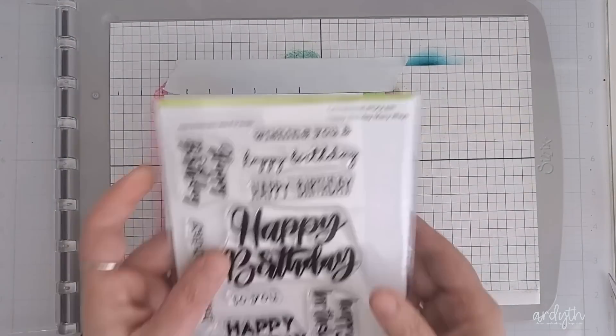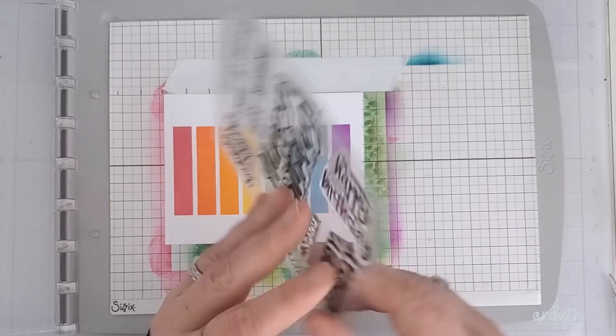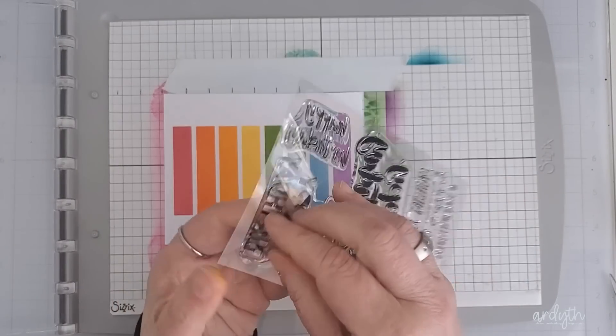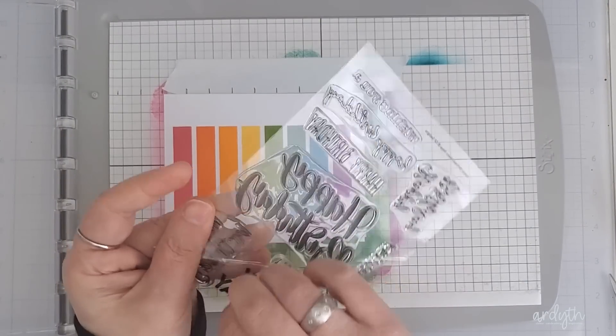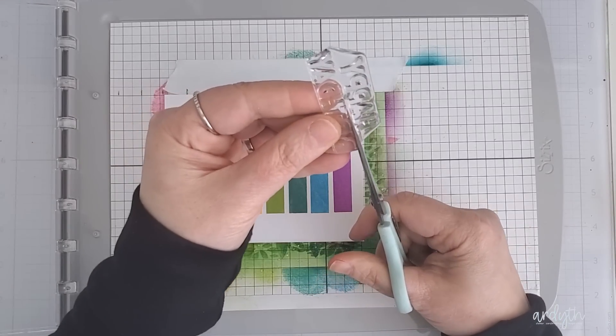Next I want to stamp my sentiment. I want 7 happies and 1 birthday and this nice bold sentiment is perfect except for one little thing. The two words are together on one stamp and they're not spaced properly to fit onto my rainbow bars. So I performed some stamp surgery.